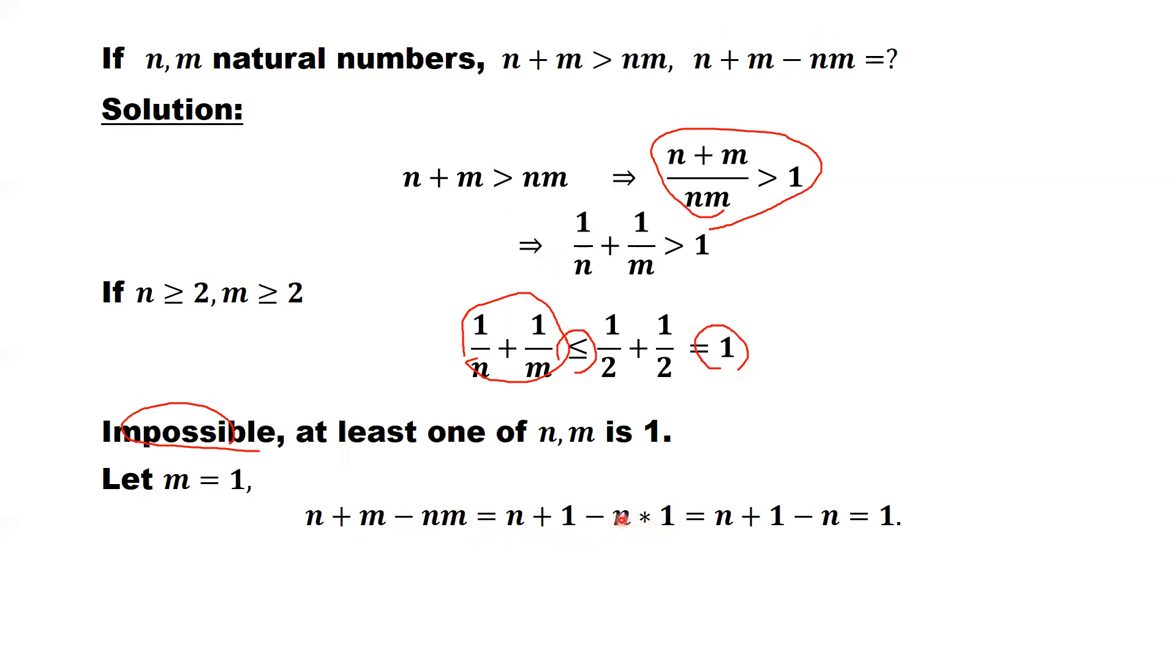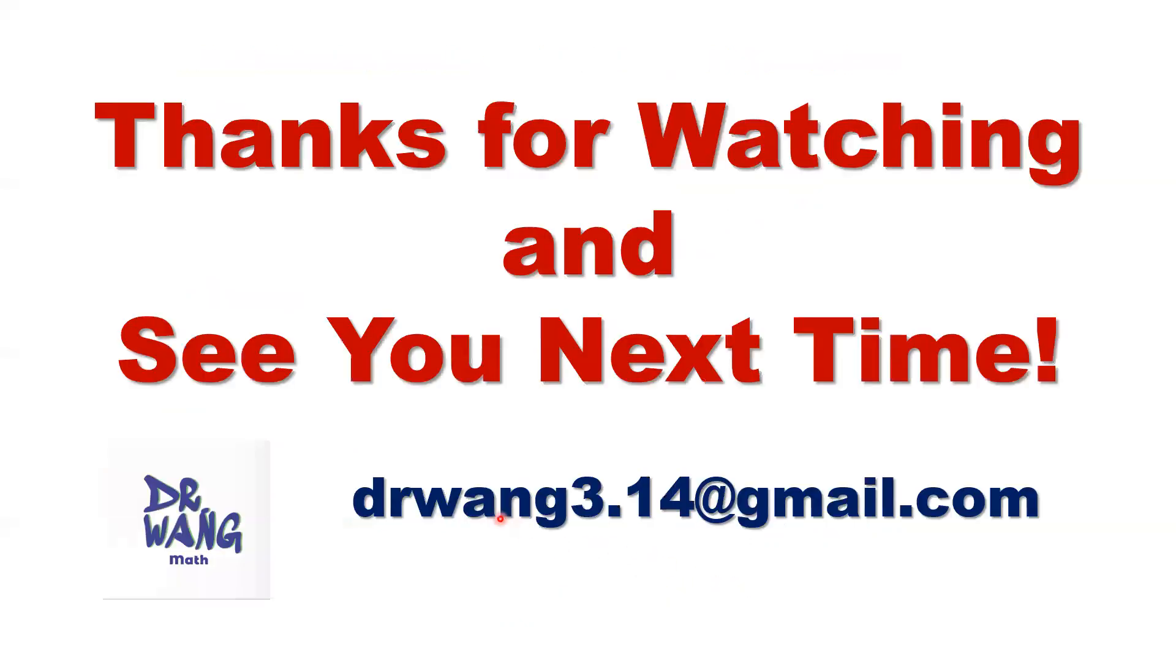That's 1 here, 1 times n equals n. So here, n minus n cancel each other equals 1. So this is the final result. n plus m minus n times m equals 1. That's all. Thanks for watching.